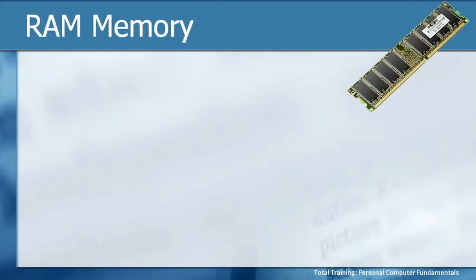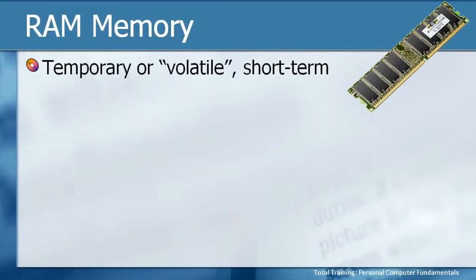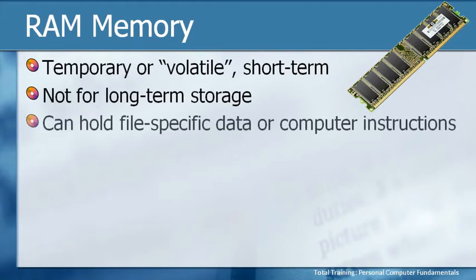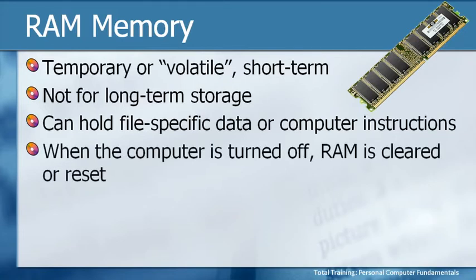Now that, of course, is different from RAM memory. Remember that the hard drive is storage, but RAM memory is not. RAM is temporary — sometimes called volatile or short-term. It's not for long-term storage. If you want to keep something a long time, you'd better not keep it in RAM, because as soon as the computer goes off, that information will be lost. RAM can hold file-specific data — like if I'm typing a letter, until I actually save it, that will be held in RAM. But it also can contain computer instructions. When the computer is turned off, RAM is cleared or reset, so it is not a storage place.